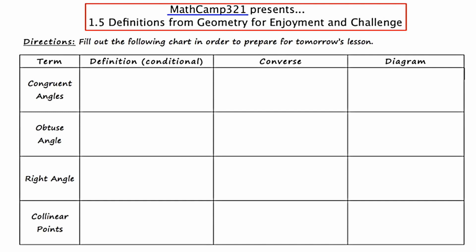Hey guys, this is MathCamp321 presenting a video on section 1-5 of your geometry book, Geometry for Enjoyment and Challenge. What we're going to cover today are the definitions presented in this section — there are about eight or nine altogether. I'll try to go through them as quickly as I can and give you an illustration of each one. Make sure you copy these definitions and any diagrams into your notebook or packet so that you're prepared for the lesson.